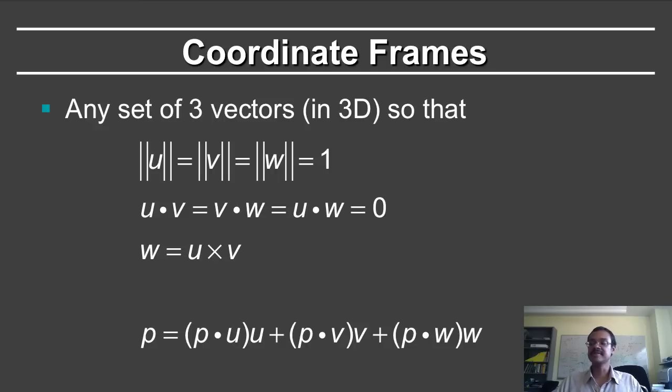One of the interesting things about this is that a vector p can be written in terms of its projections onto the vectors u, v, and w. So p dot u is the projection onto the vector u with the vector u. p dot v is the projection onto the vector v times the vector v. p dot w is the projection onto the vector w times the vector w.